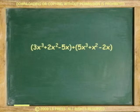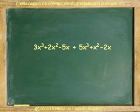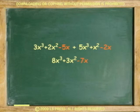Another example. Evaluate. Remove parentheses. Combine coefficients according to base and exponent. Answer: 8x cubed plus 3x squared minus 7x.